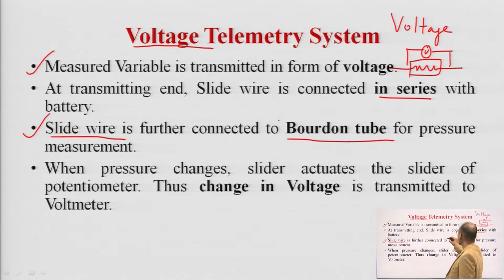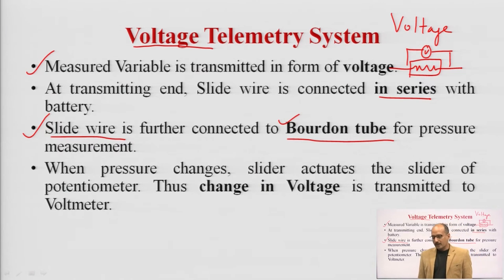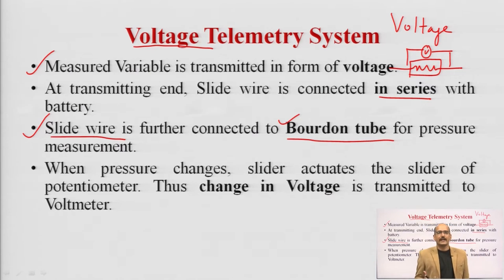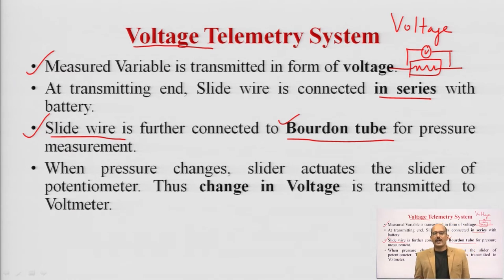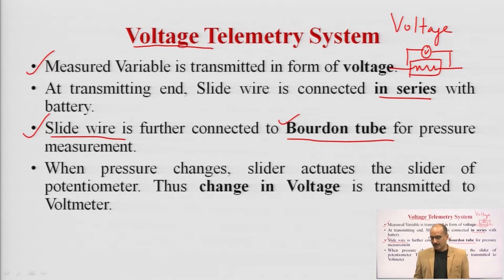Here I am taking the example of a Bourdon tube, though it is not always necessary — you can use any type of transducer or sensor as per your requirement. For example, when measuring pressure at a remote location, we use a Bourdon tube. The Bourdon tube is made of elastic material which can expand or contract as per changes in pressure. When the pressure changes, the slider actuates the slider of the potentiometer, and the change in voltage is transmitted to the voltmeter.